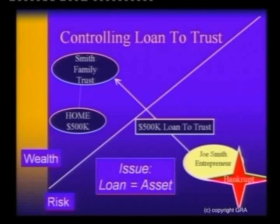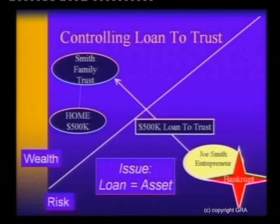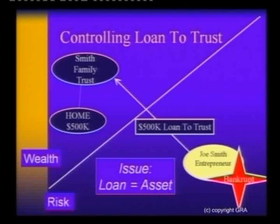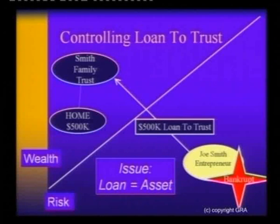The official assignee — the person who bankrupts an individual — what are they going to do as soon as they step into Joe Smith's shoes if he's had a problem and find that the trust owes him half a million dollars? They'll call on the loan — exactly.